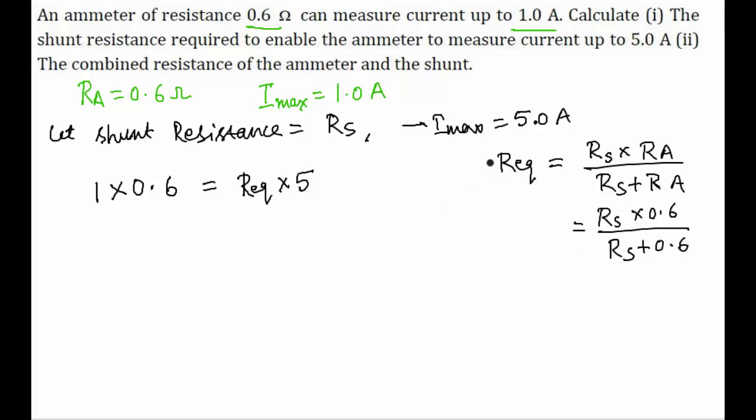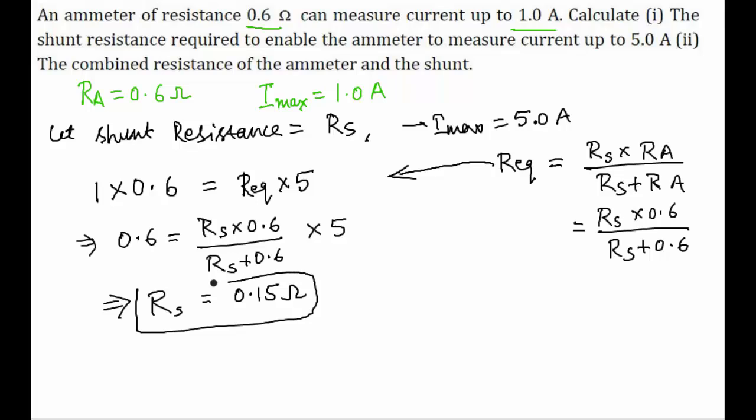Now we will be using this R equivalent expression in our equation. This will be 0.6 equals to Rs into 0.6 by Rs plus 0.6 into 5. And after this when we solve this equation we get the value of Rs to be 0.15 ohm. This is the solution for our first part.